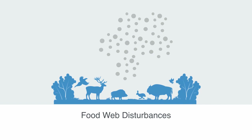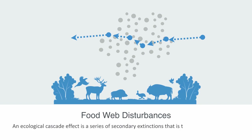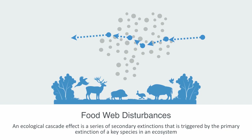In the same way that connectivity can enable ascendancy and robustness, it can also enable large food web disturbances in the form of cascades. As food webs become more interconnected, this creates more pathways for disaster spreading and cascading effects. An ecological cascade effect is a series of secondary extinctions triggered by the primary extinction of a key species in the ecosystem. Secondary extinctions are likely to occur when the threatened species are dependent upon a few specific food sources or some other mutualistic interaction.